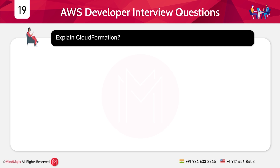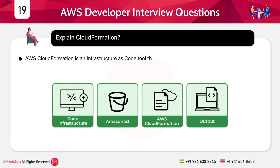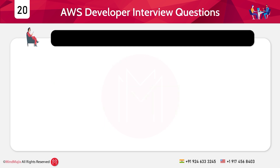Question 19: Explain CloudFormation. Answer: AWS CloudFormation is an infrastructure-as-code tool that lets you define AWS resources in YAML or JSON templates. It ensures repeatable and automated infrastructure deployment.